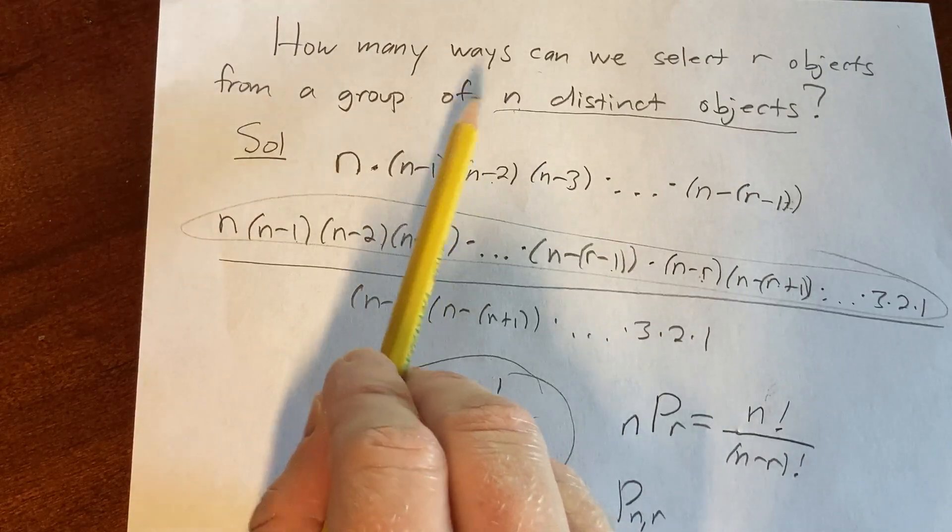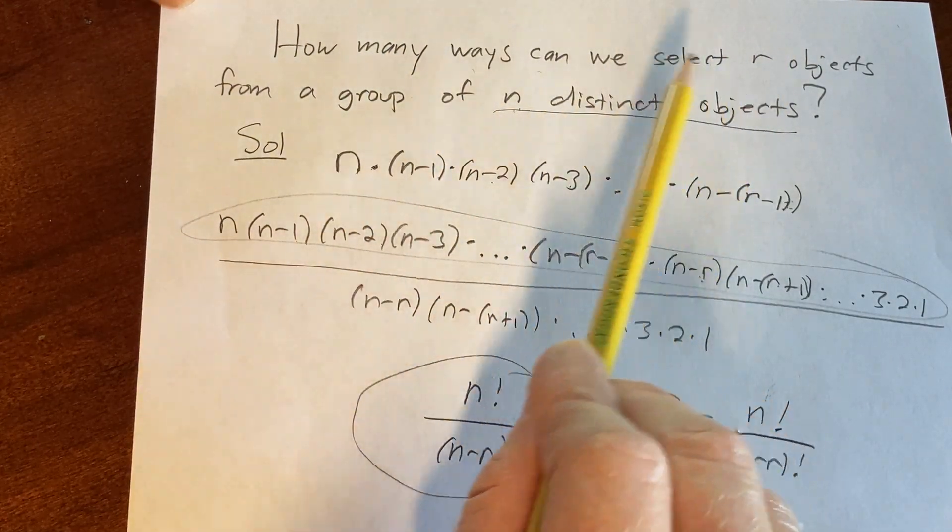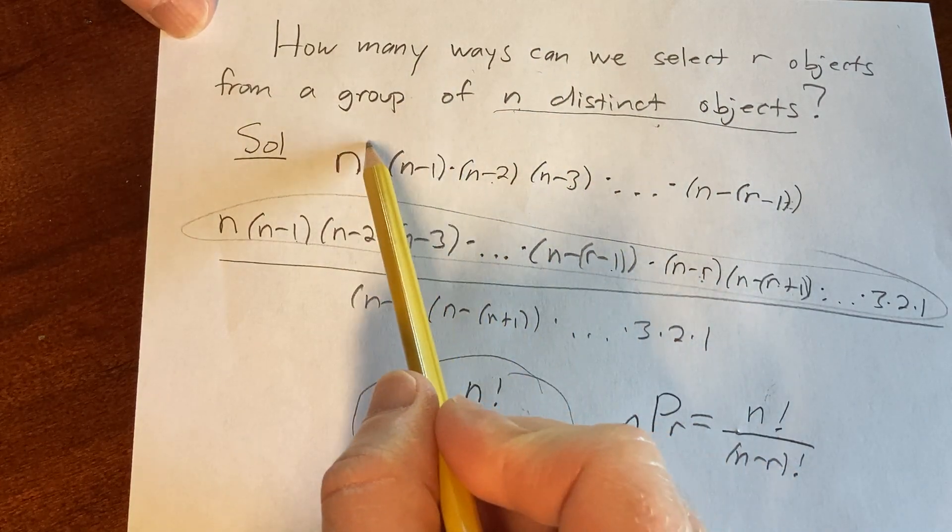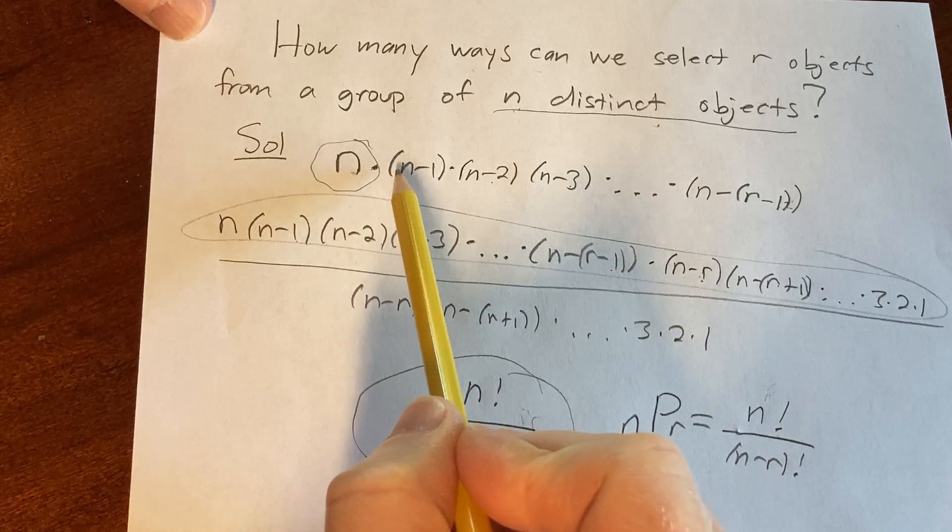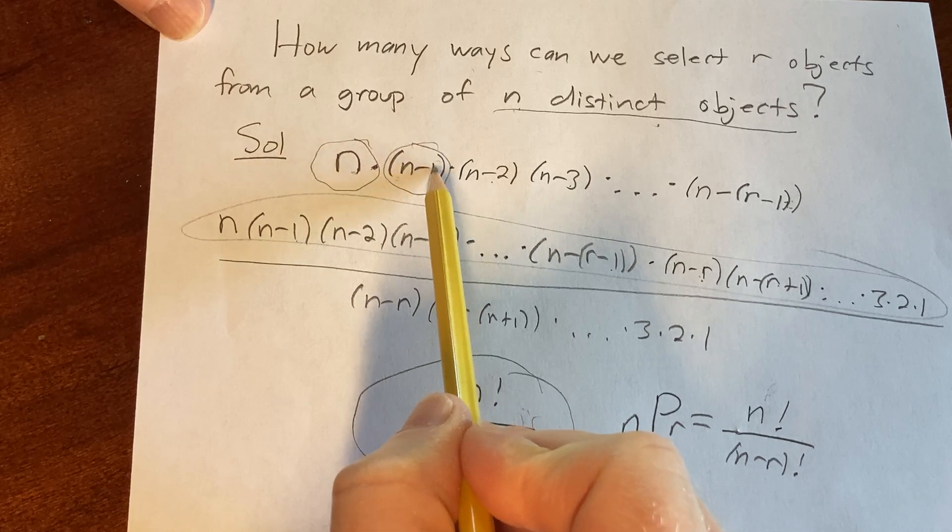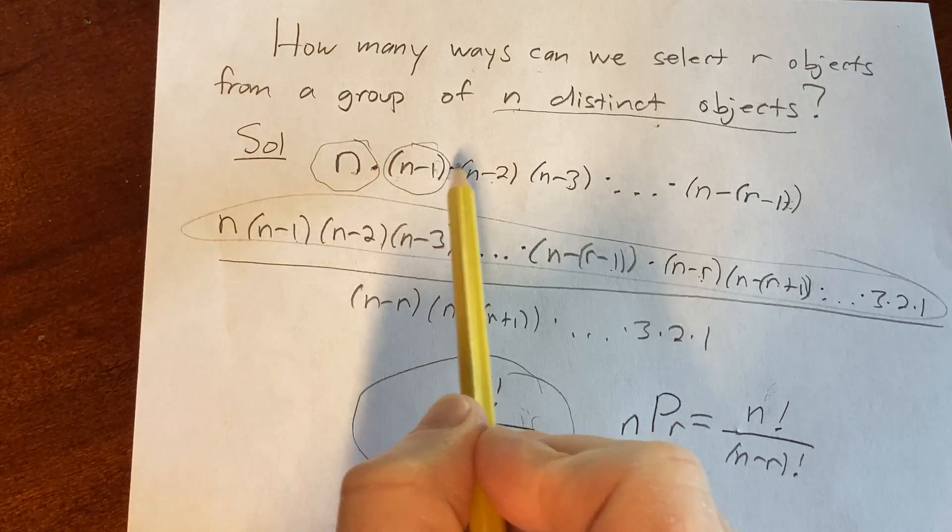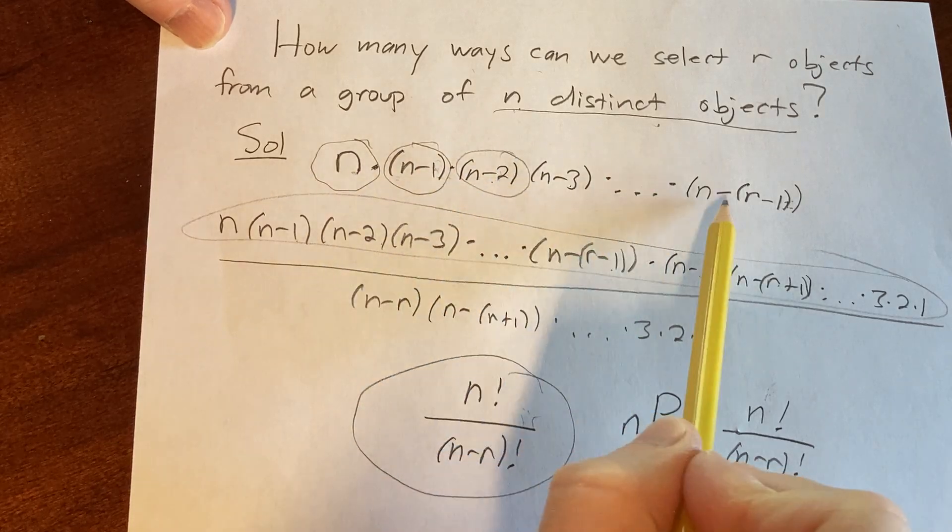So again, let's just go through it one more time. You have n objects and you're trying to pick r. So you have to think about it. There's n ways to pick the first object. Once you've picked that first object, you have n minus 1 objects left. So there's n minus 1 ways to pick that second object. And then you have n minus 2 objects left. So there's n minus 2 ways to pick that third object. When you get here...